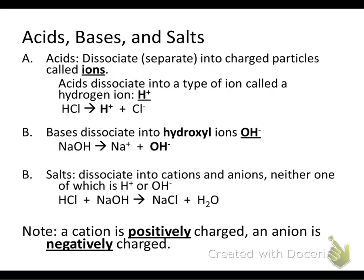For the purposes of this class, we're going to call an acid something that when you put it into water, it dissociates and releases hydrogen. That'll be our definition. So when I put an acid into water, it dissociates into its ions, and one of those ions is going to be H+, the hydrogen ion. For example, if I have hydrochloric acid, HCl, and I put it into water, it will dissociate into hydrogen ion and chloride ion. Because I get hydrogen, I'm going to call it an acid.